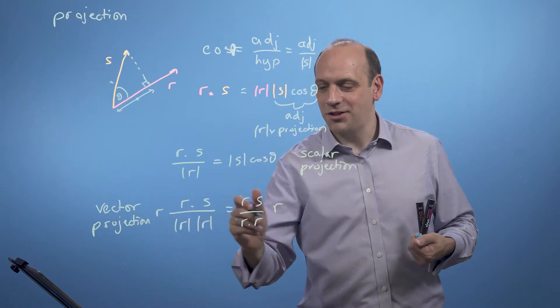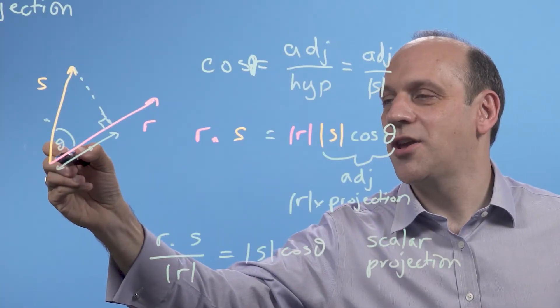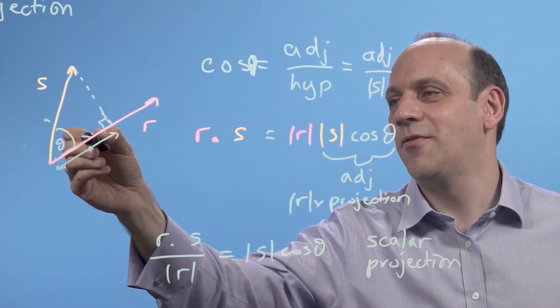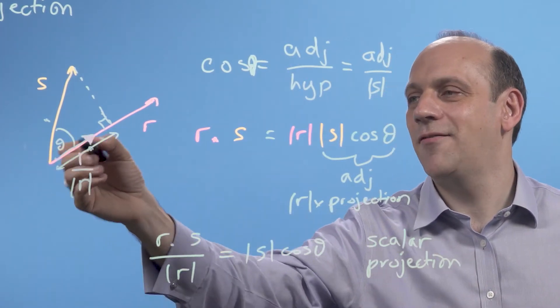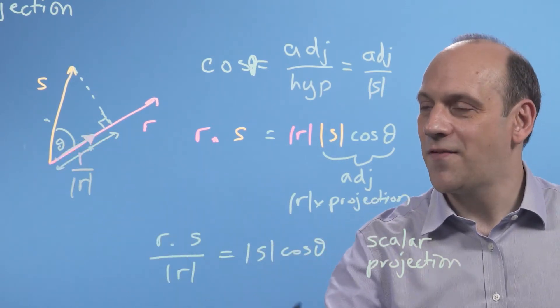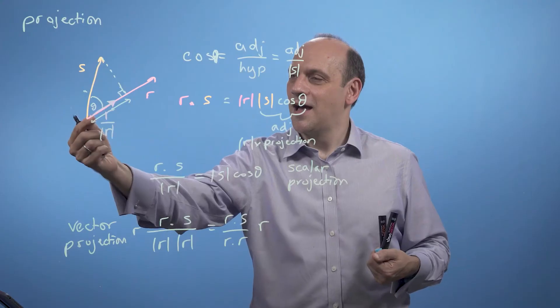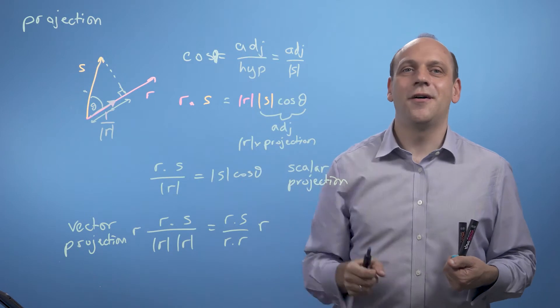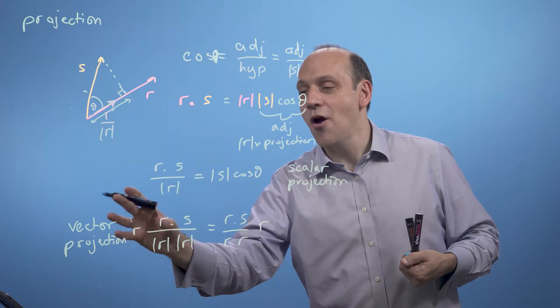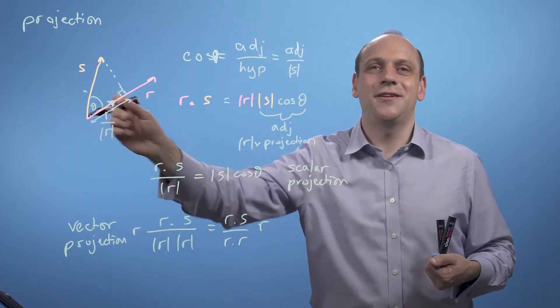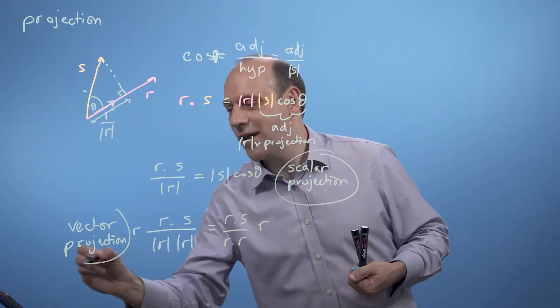So that vector projection is a number times a unit vector that goes in the direction of r. So if r, say, was some number of lengths, that would be r divided by its size, say if that was a unit length vector I've just drawn there. And the vector projection would be that number s dot r, that adjacent side, times a vector going in the unit length of r. So that's, if you like, the scalar projection also encoded with something about the direction of r, just a unit vector going in the direction of r. So we've defined a scalar projection here, and we've defined a vector projection there.